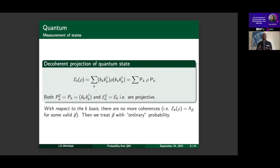This is called the decoherent projection of the quantum state. We apply this map and get back a diagonal density matrix — a diagonal quantum state interpreted completely with ordinary probability. From my point of view, there is no measurement problem in quantum mechanics. What you have is decoherence back to classical probability, and once you're in classical probability you deal with measurement however you dealt with it in probability theory. This is one type of transformation of a valid state to another valid state.